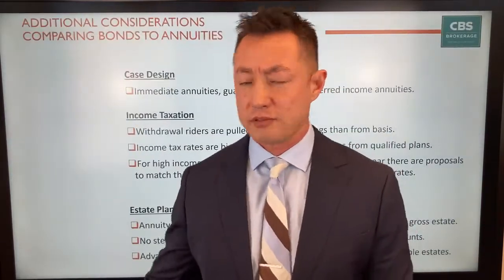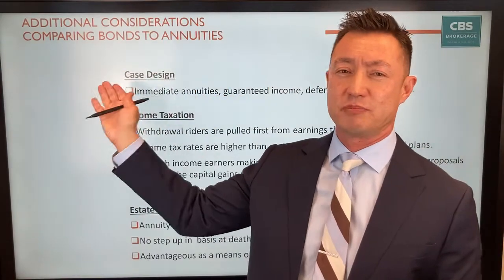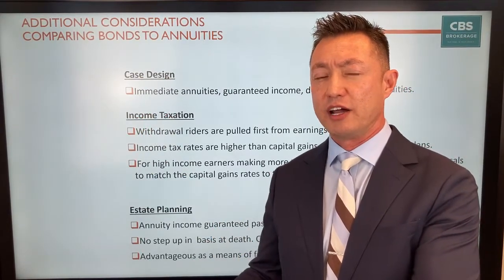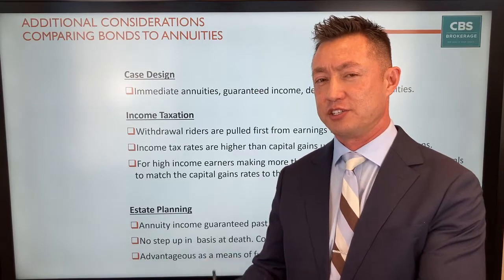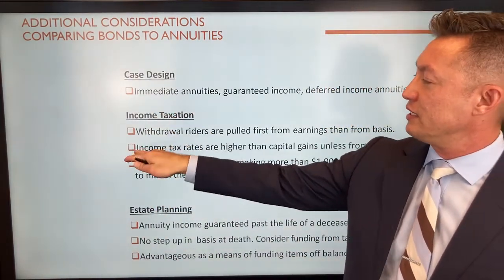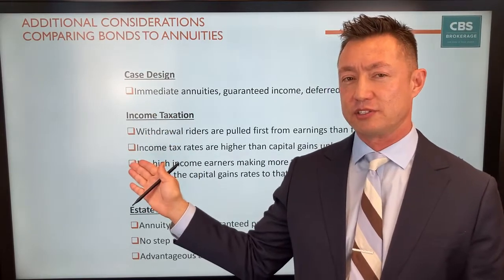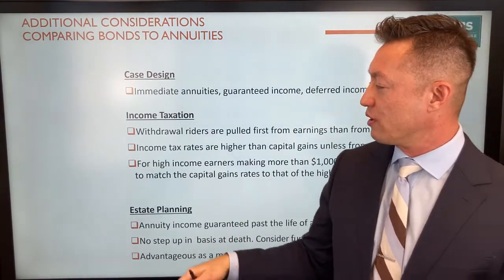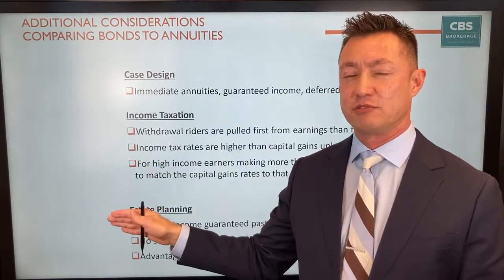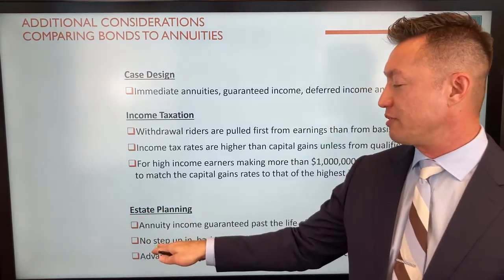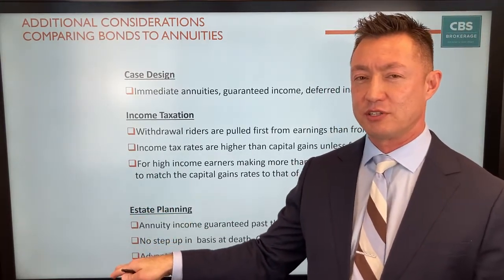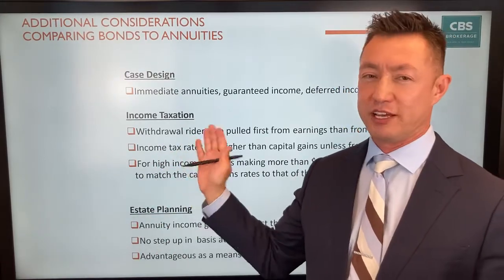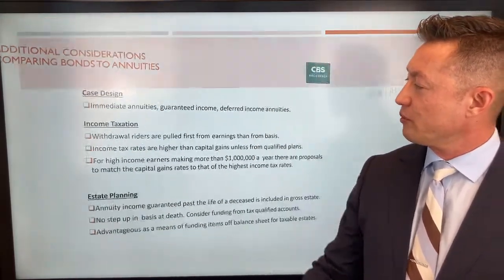There are some product-agnostic things we need to understand. We used a 40% allocation of the bond allocation to annuities. Additionally, we know that taxation of annuities — where earnings are taxed at income tax rates versus capital gains for bonds or equities — is why I'd recommend looking at qualified accounts, because you don't have that tax differential. Also, there's no step-up in basis on annuities in non-qualified accounts; again, you don't have that issue in qualified accounts, which is another reason to look at qualified assets as a means of funding this plan.